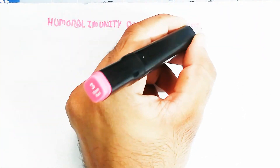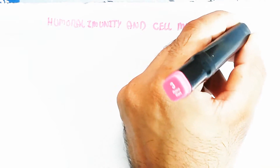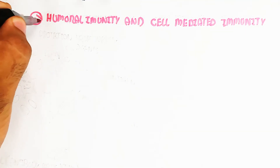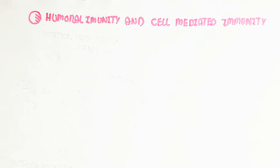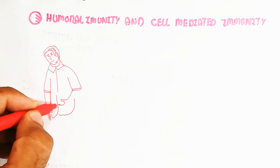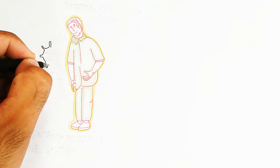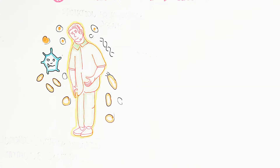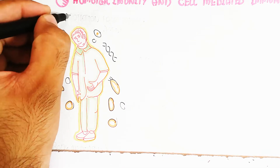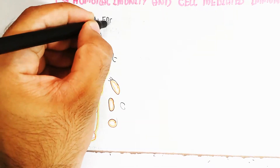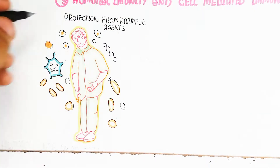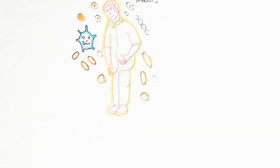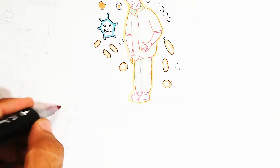In this video we will discuss humoral immunity and cell-mediated immunity. Immunity is basically the protection from harmful agents in the environment, provided through immune cells (WBCs). This is the protective mechanism through WBCs, which is important for the survival of every animal.